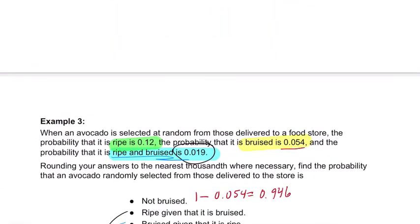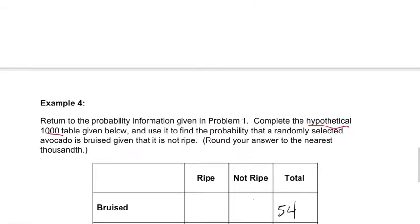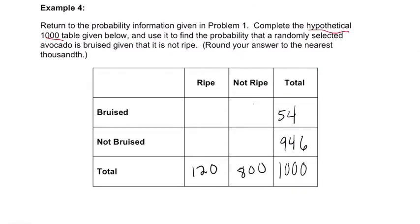Ripe and bruised is about 1.9%. So ripe and bruised is about 19. This would be then 101, right? This would be 845. This would be 35. So we have our table filled out.